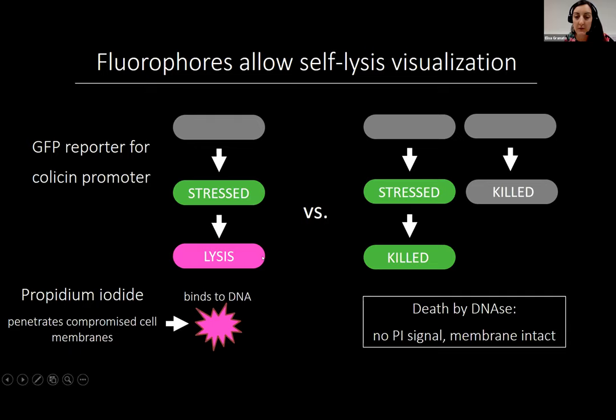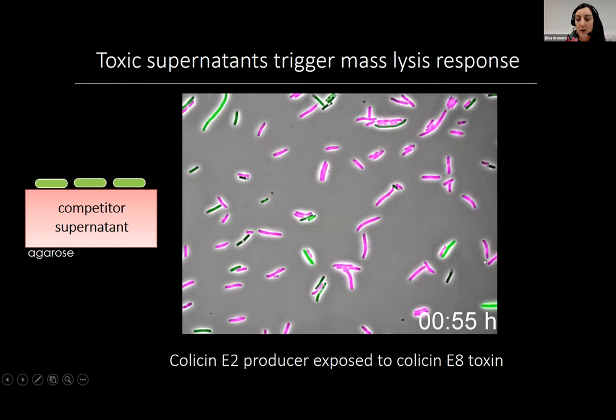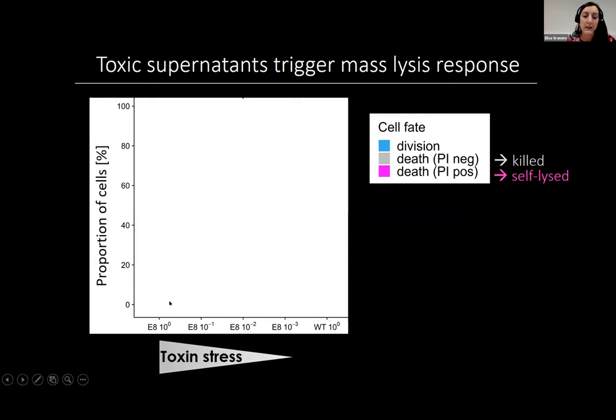In a first set of experiments, we exposed the reporter strain to sterile supernatant from a competitor containing DNA toxins — placing them on an agarose pad infused with supernatant to watch what happens. In this example time-lapse, the cells are reacting to colicin E8 toxin, which is a DNase. They turn green and then pink, telling us they're stressed, seeing a lot of DNA damage, and then deciding to self-lyse in response to make their own toxins. We repeated this experiment at different toxin concentrations, plotting toxin stress on the x-axis and the proportion of cells by cell fate on the y-axis.